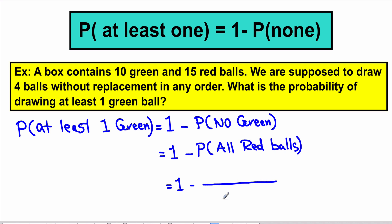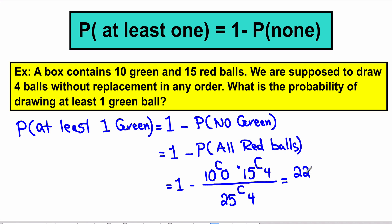Altogether we have 25 balls and we're drawing four. There are 10 green balls available, but our desired event for the complement is all red balls — so we're selecting none of the green balls. From the 15 red balls we draw four, giving us C(15,4) over C(25,4), which simplifies to 2257 over 2530.